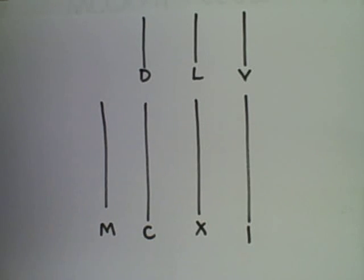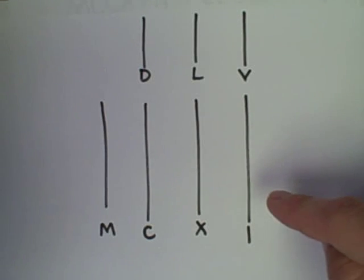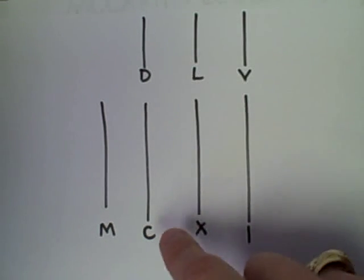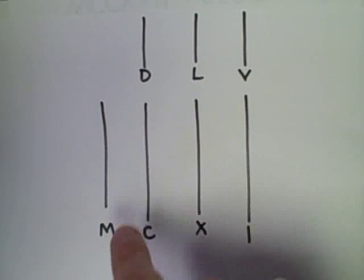Here's a representation of a Roman abacus with ones, fives, tens, fifties, hundreds, five hundreds and thousands.